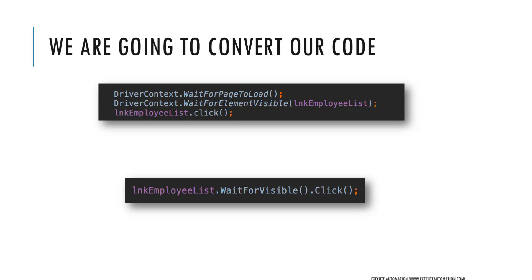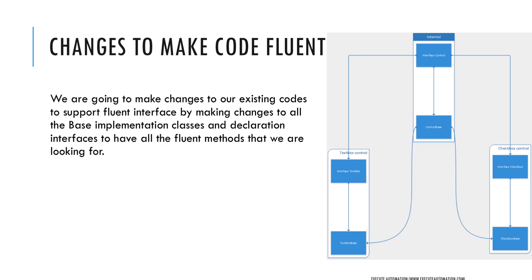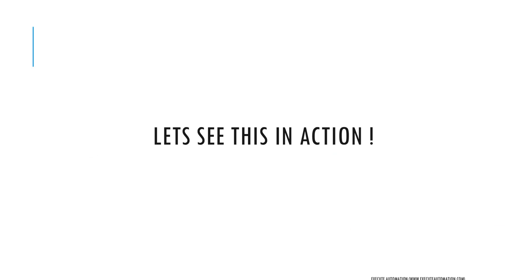The code becomes more readable and understandable, and you can use this with any mix-and-match combination. For instance, if you want to click and then wait for visibility you can do that, and if you want to wait for visible and then perform the click you can do that as well. We are going to make changes to our existing code to support the fluent interface by updating all the base implementation classes and declaration interfaces to have all the fluent methods we're looking for.